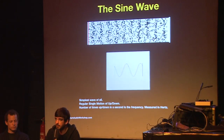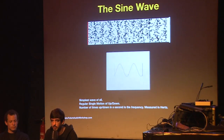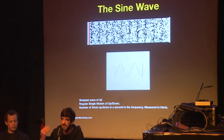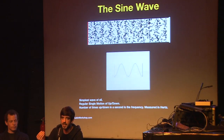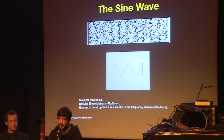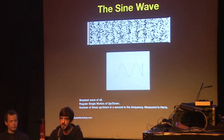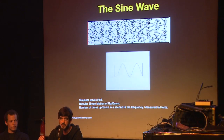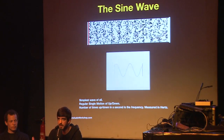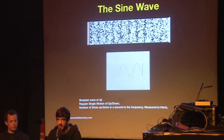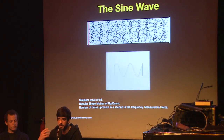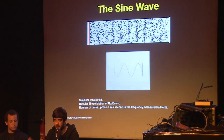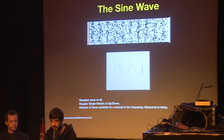We measure this in frequency — how many times it goes back and forth in one second. If it goes back and forth once, we say it has a frequency of one hertz. Hertz is the measurement we use for frequency. If it goes twice per second, then we say it's two hertz, and so on.